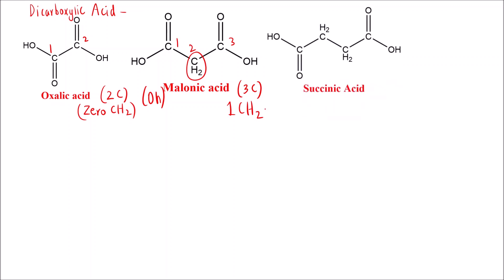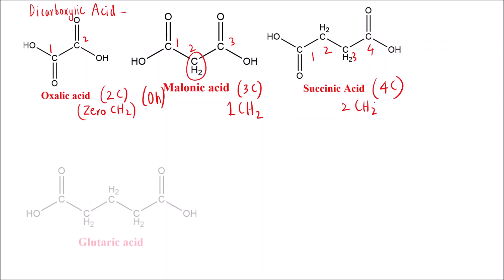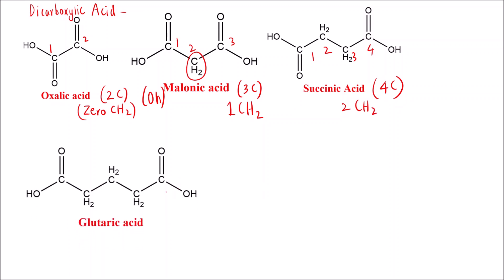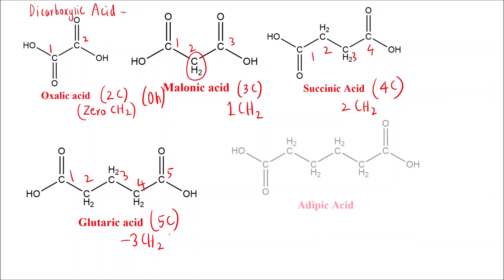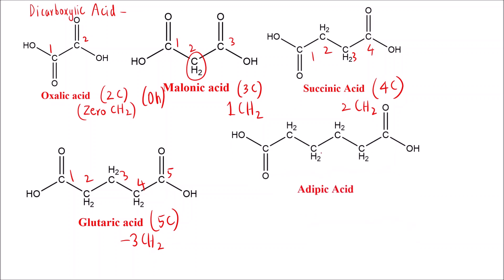Then we have succinic acid — a four-carbon dicarboxylic acid with two CH₂ groups. 'S' stands for succinic acid. Next is glutaric acid — a five-carbon dicarboxylic acid with three methylene groups. 'G' stands for glutaric acid.